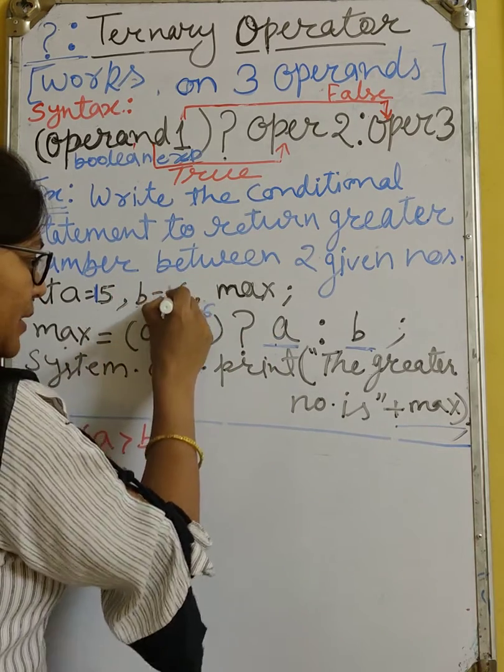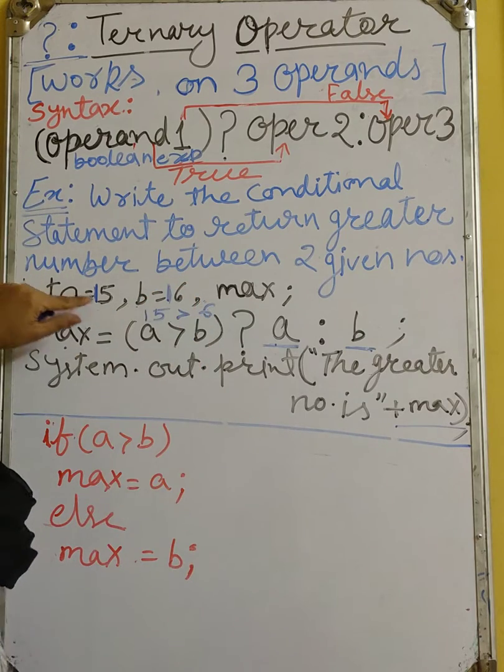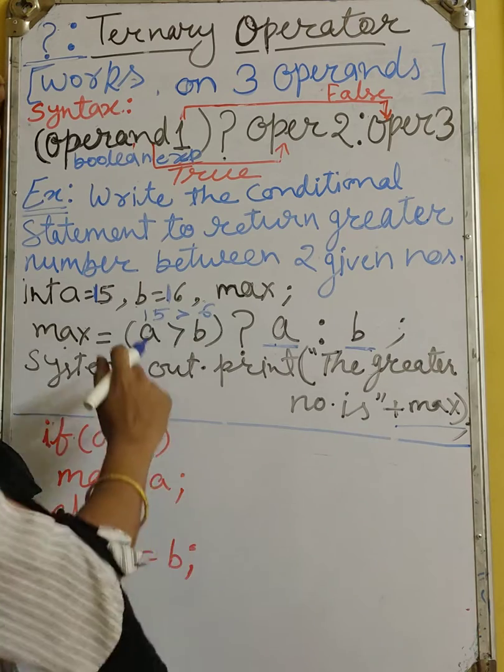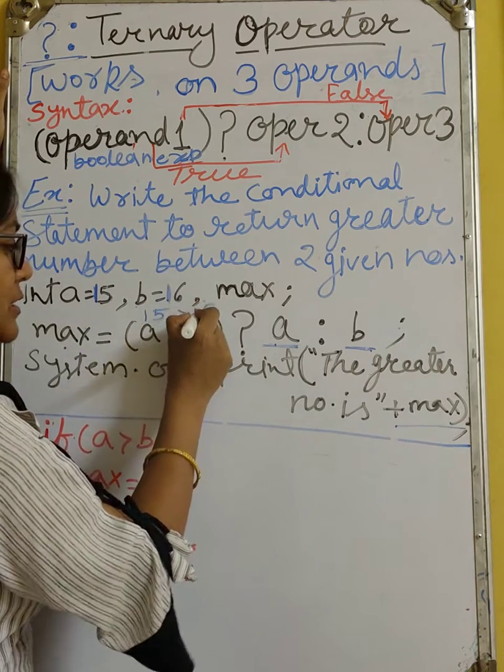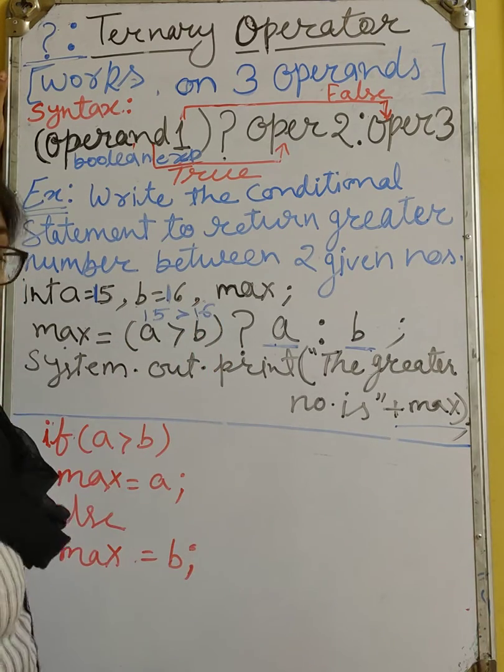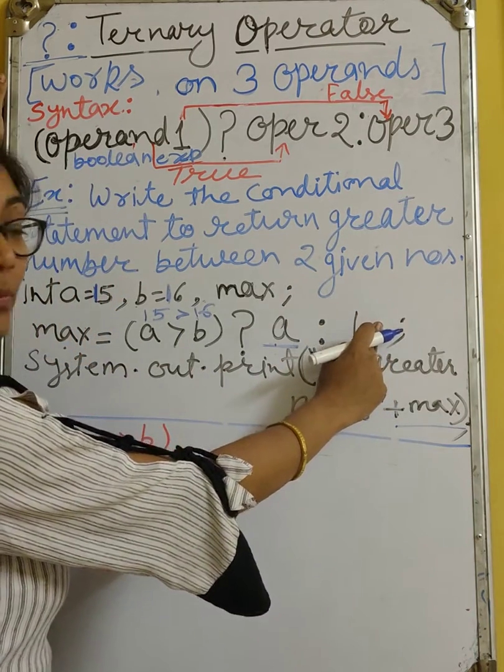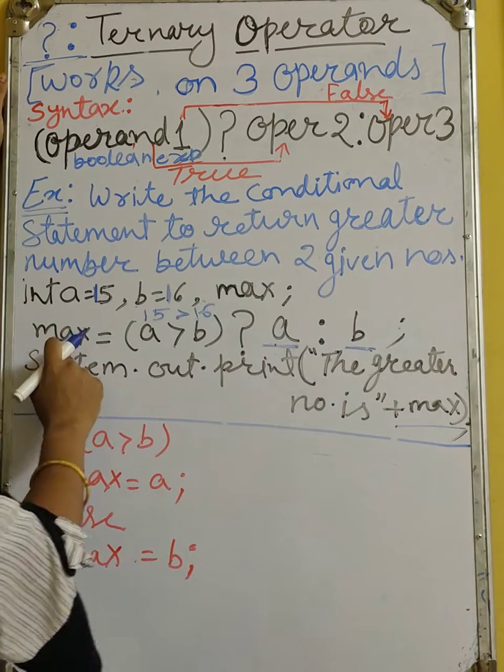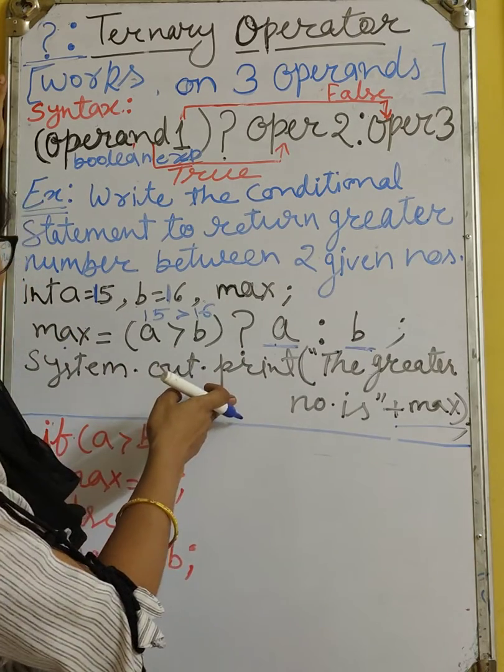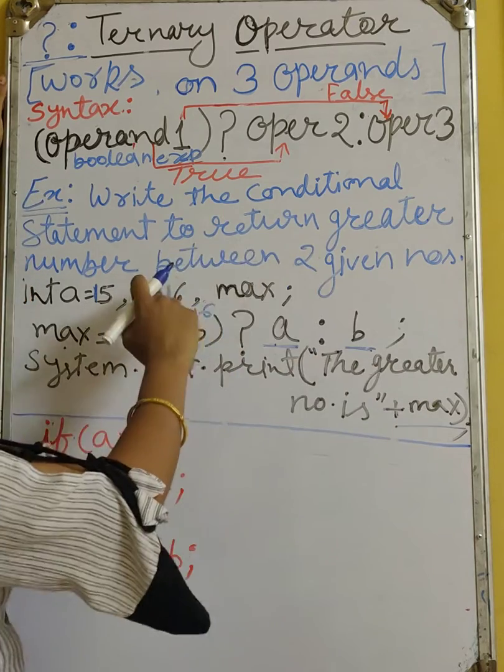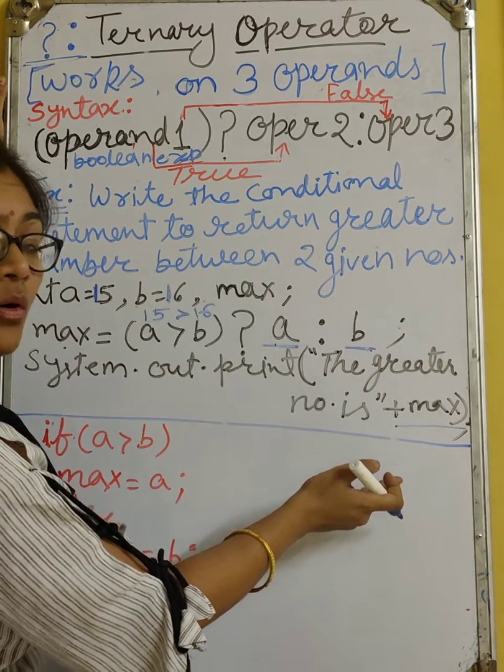Now let's take another example. If I am writing here A equals to 15, B equals to 16. Then 15 greater than 16, this condition is false. When the condition is false, then operand 3 is going to be returned. Then what is the value of max? It will be 16. Now if you are taking system.out, then it will give you 16. In earlier example, it would have given you 15.